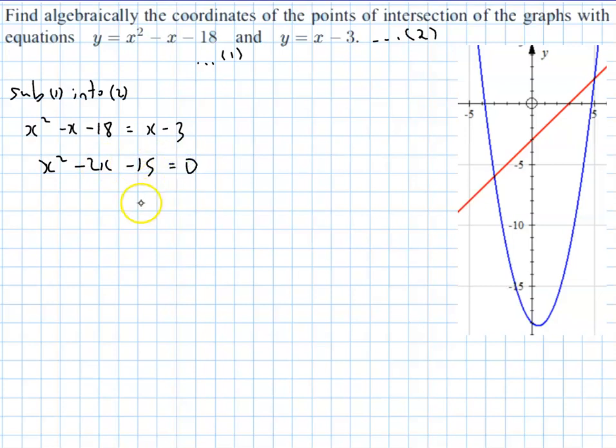And now that quadratic there will factorize. So we have x times x for the x squared. Now 15 is either 15 times 1 or 5 times 3. 5 times 3 is going to work because I can get a minus 2 out of that. If I make it minus 5 and plus 3, they multiply to make minus 15, they add to make the minus 2.